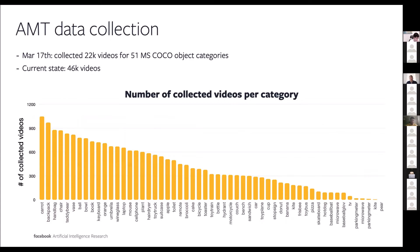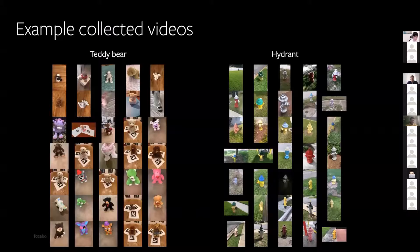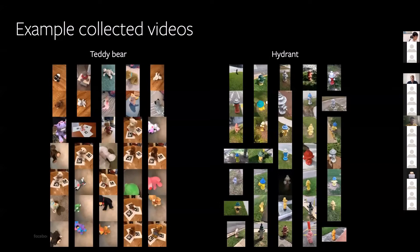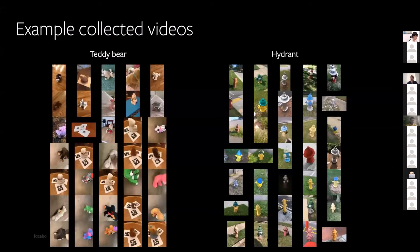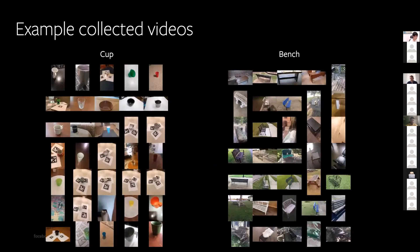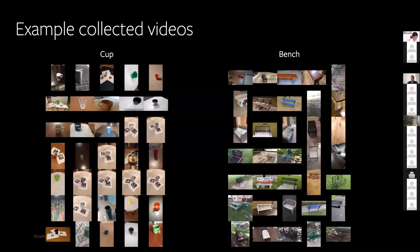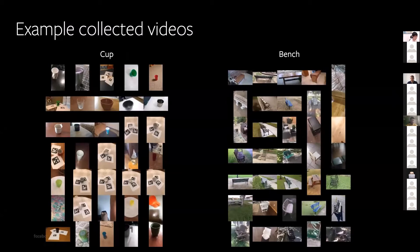By the ICCV deadline of March 17th, we collected 22k videos from 51 Microsoft COCO categories. After the submission deadline we continued collection, and at this point the dataset is doubled to 46k videos. You can see the number of videos collected per category. The videos contain very decent captures — it seems the mechanical Turkers are actually quite diligent in following our advice about how to capture the videos.